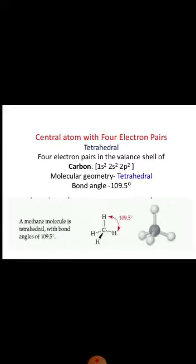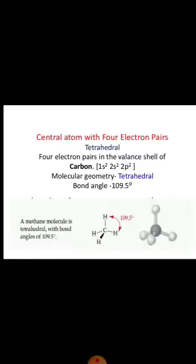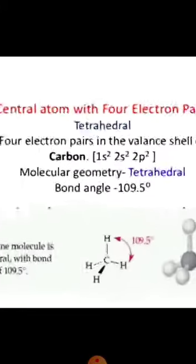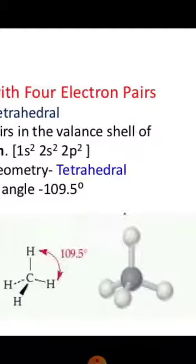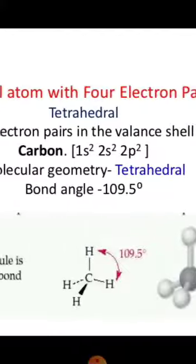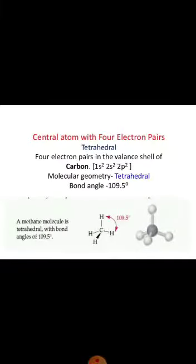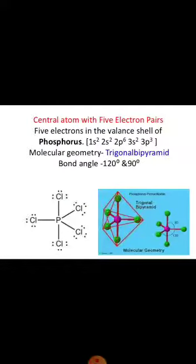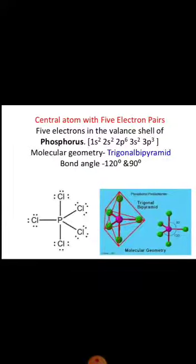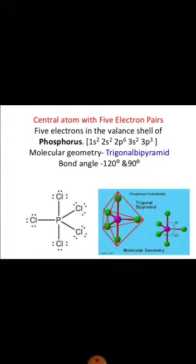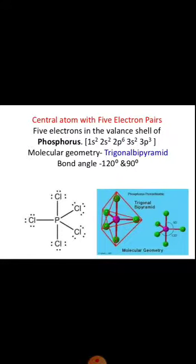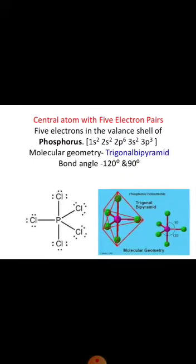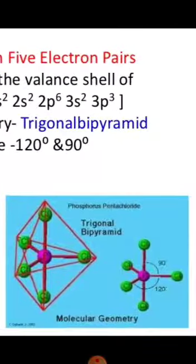Then, central atom with four electron pairs. The best example is methane. Methane is carbon with four hydrogens surrounding it. If you look at the 3D structure, it has one hydrogen in front, two on the sides, and one on top. This geometry is tetrahedral and the bond angle is 109.5 degrees. Central atom with five electron pairs: phosphorus is a fifth group member and has five electrons in the valence shell — for example, PCl5. This geometry is trigonal bipyramidal, with bond angles of 120 degrees and 90 degrees.